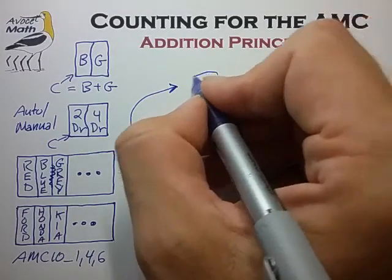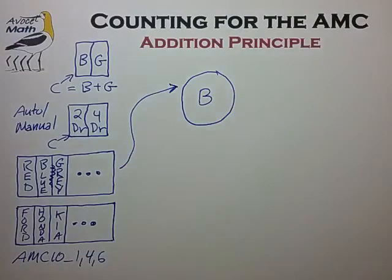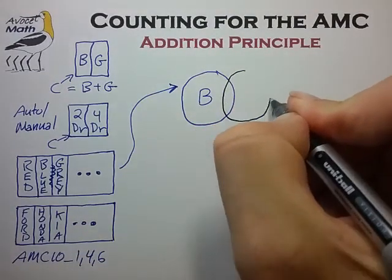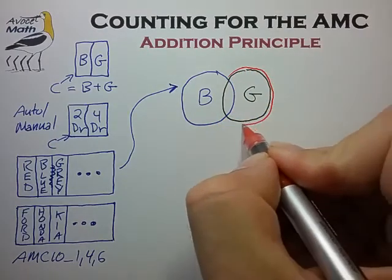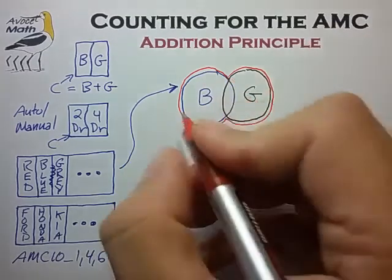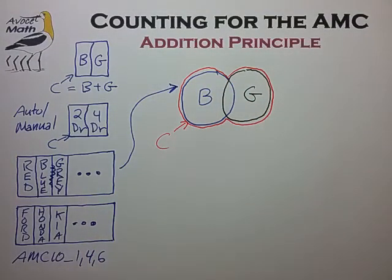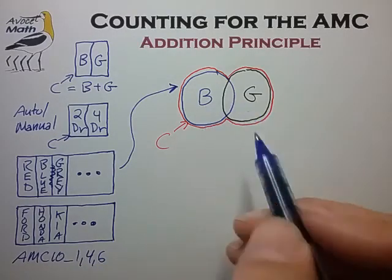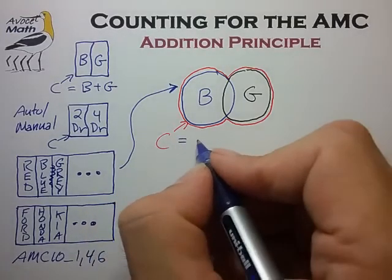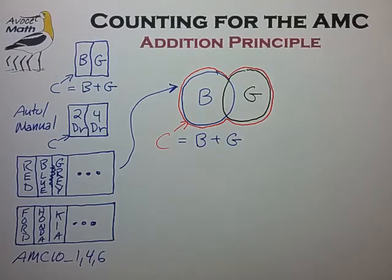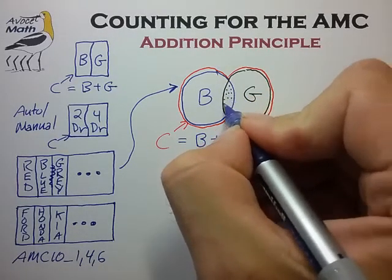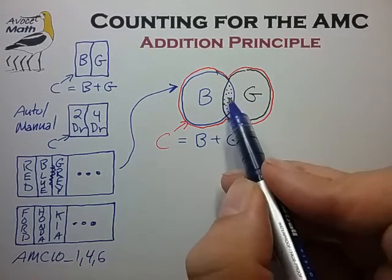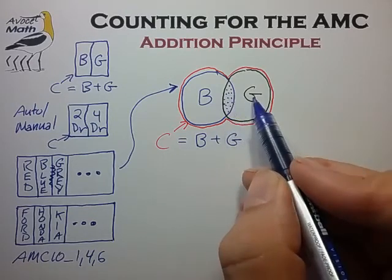Let's consider a car lot consisting only of blue cars and gray cars. We have a subset of blue cars, a subset of gray cars, and together they comprise all the cars on the lot. We'll denote the total number of cars as C. It's tempting to write C as simply the number of blue cars plus the number of gray cars, but this formula has a problem: we have to pay special attention to cars in the intersection region — those that are both blue and gray — because they are counted in both the B term and the G term.